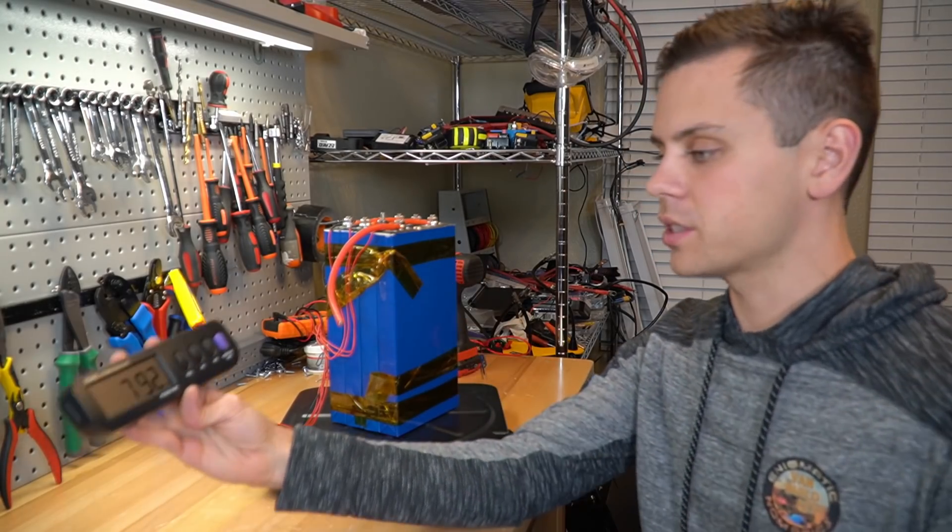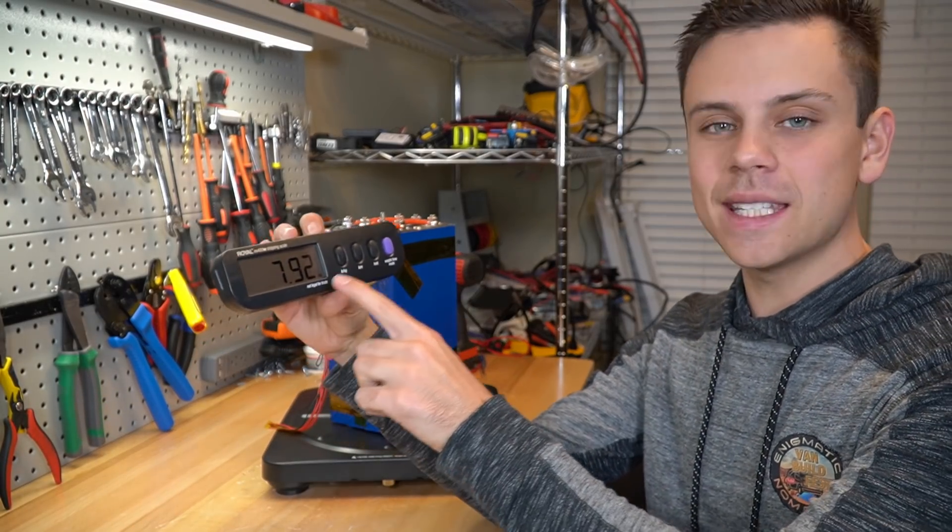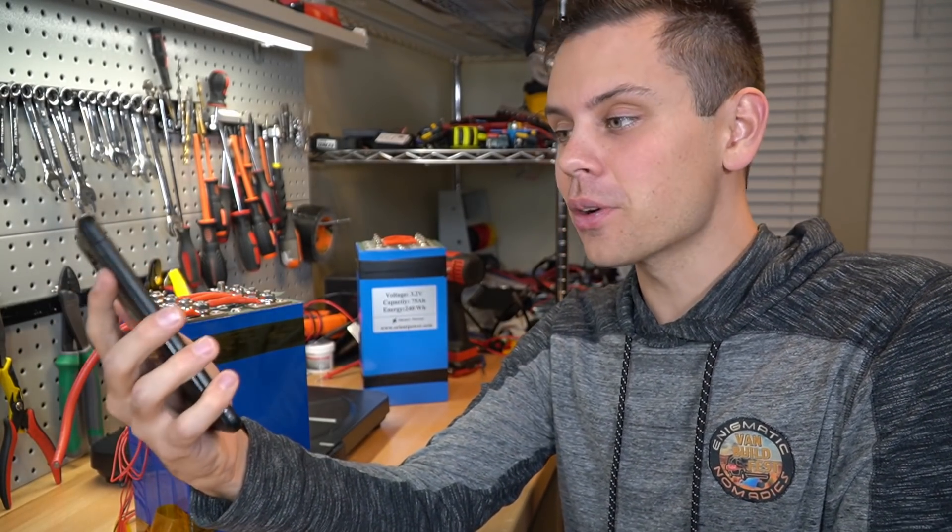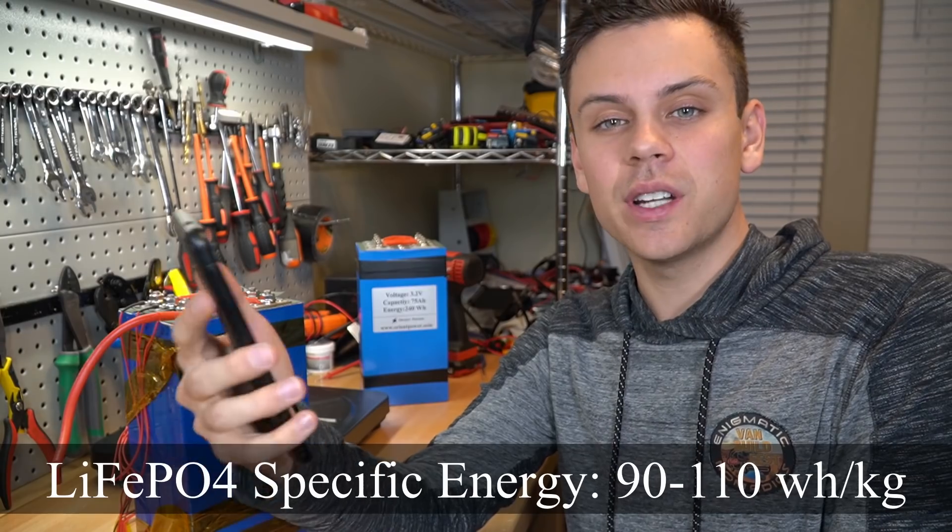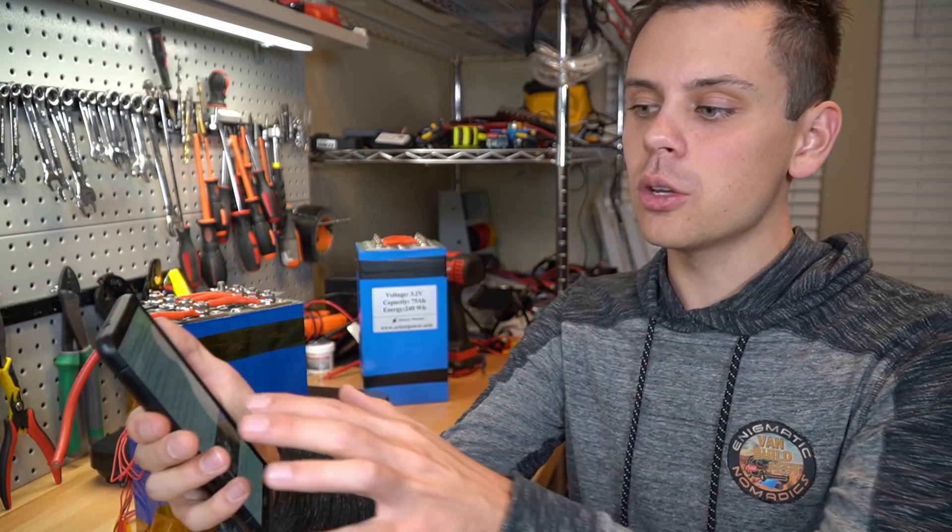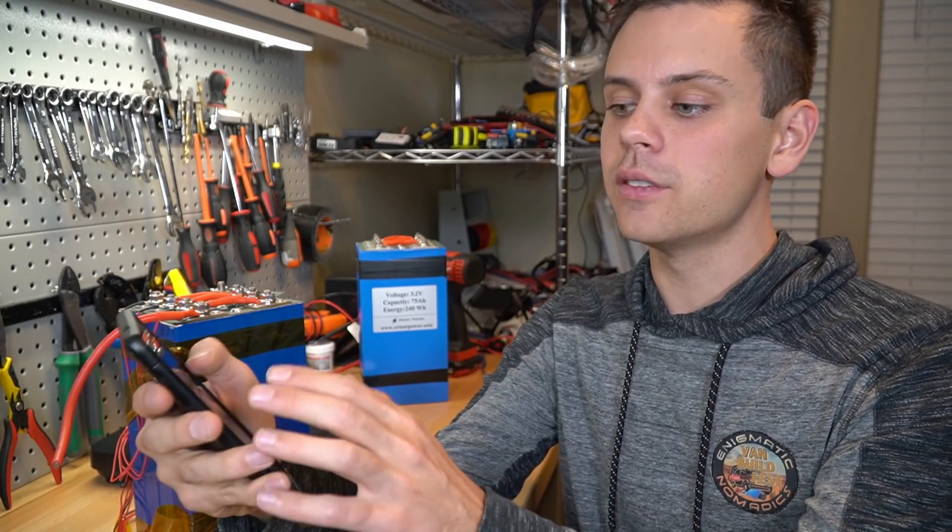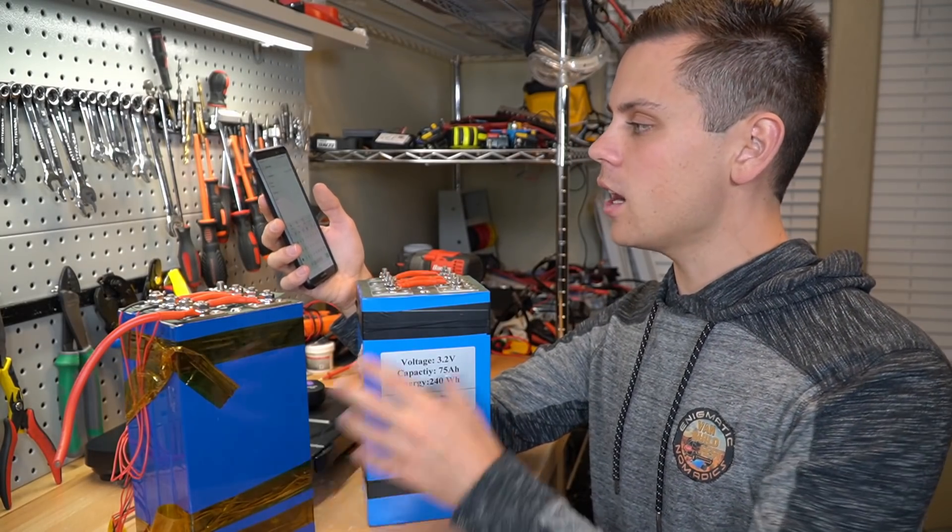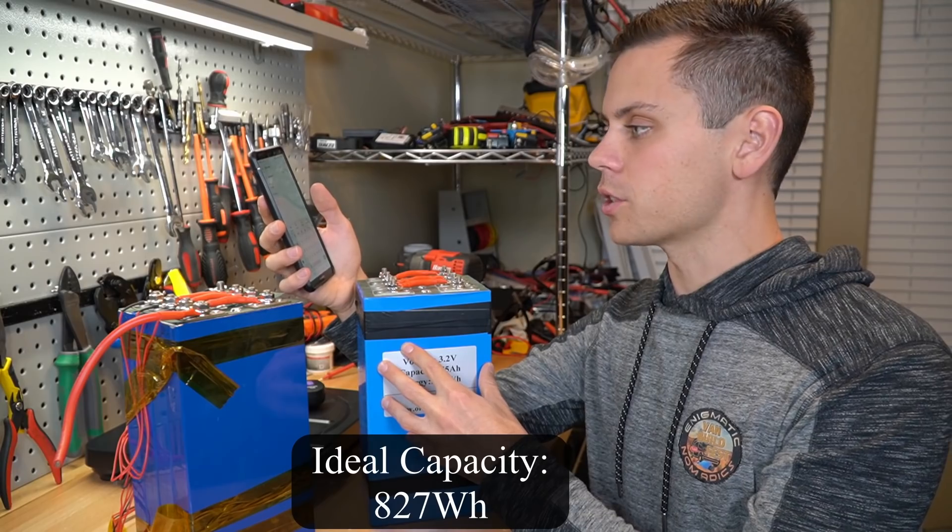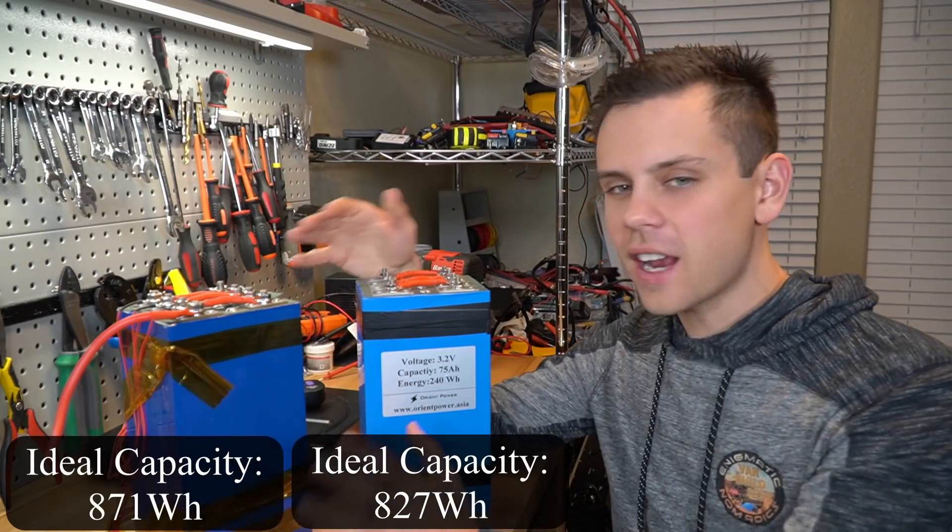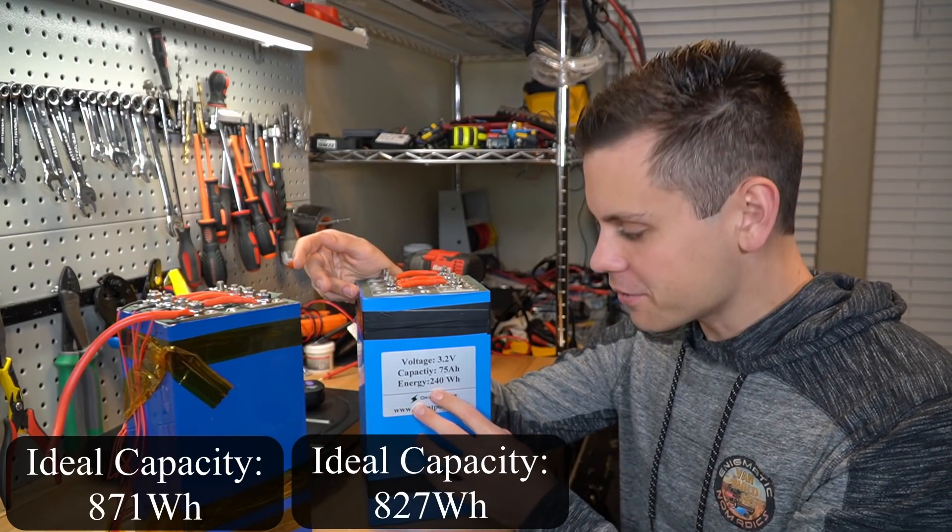And now we have the 100 amp hour cells, and they are 7.92 kilograms. If we jump on Wikipedia, the specific energy for this chemistry is 90 to 110 watt hours per kilogram. And that is true across most of my battery testing. So we're going to use the best case scenario of 110 watt hours per kilogram. And if we calculate that out, we will have 827 watt hours over here and 871 watt hours over here, which is a very different number than what these are rated for.